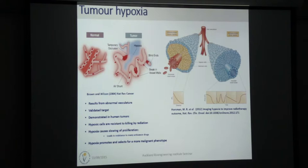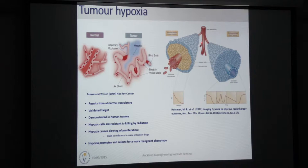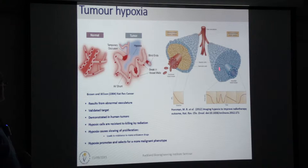A cartoon about this hypoxia emphasises that the vessels become tortuous and there's no longer a regular pattern to blood vessels in tumours. Diffusion-limited hypoxia develops where you've got a patent blood vessel but oxygen has been consumed so rapidly that it can't diffuse to all of the cells at the periphery. These cells eventually die and form necrotic areas, and you can have temporary occlusion of blood vessels where the whole tumour cord becomes hypoxic.